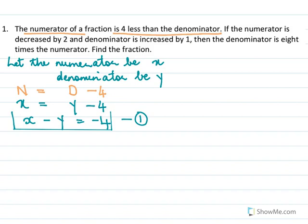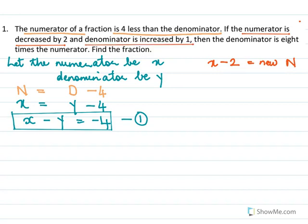Now the next equation says if the numerator is decreased by 2, we know the numerator is x and we decrease it by 2 — this is the new numerator. And the denominator is increased by 1 — this is the new denominator.